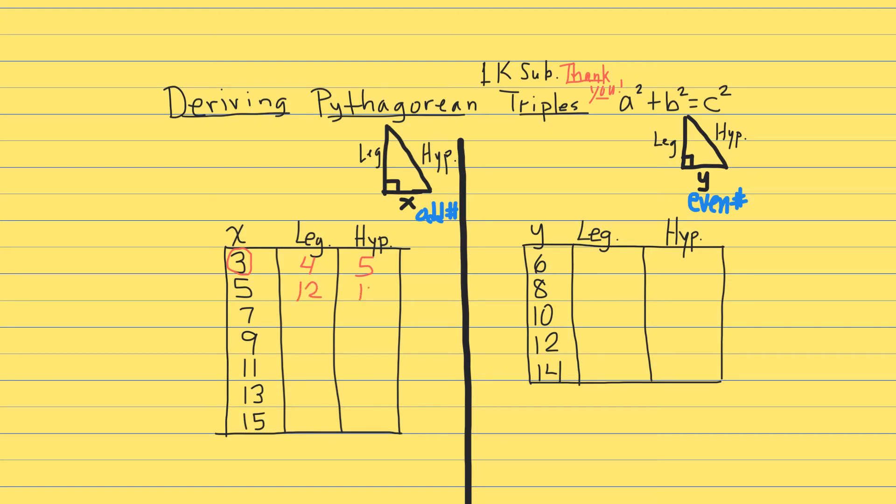We know that 5 squared plus 12 squared is equal to 13 squared. Moving right along, we have 7. So if x is 7, we square the 7 and you get 49. If I subtract 1, I get 48. Half of 48 is 24, and the hypotenuse would be one more, 25.